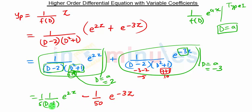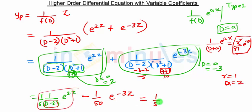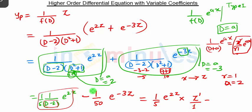The (D minus 2) term with e raised to 2z is still creating a problem. We know that if we have a (D plus a) term and e raised to ax, the solution is given by x raised to r upon r factorial into e raised to ax. In our case r is 1, and since x is replaced by z, we write z raised to 1 upon 1 factorial, which is simply z.